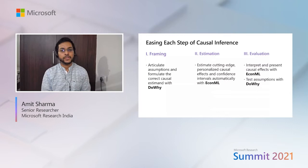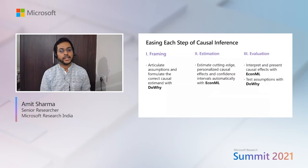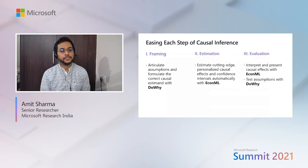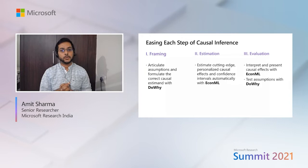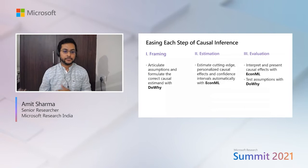In the framing step, we are transferring the domain expert's knowledge into a formal framework. This helps, first, in transparently establishing what the assumptions are, and second, in sharing those assumptions with other people and getting reviews. Once you have figured out the causal question and which methods are allowed for that question, the next step is estimation. Here we often have high-dimensional data, and we may be interested in the treatment effect on a particular set of people. We need cutting-edge personalized causal inference tools that EconML provides, based on recent research.